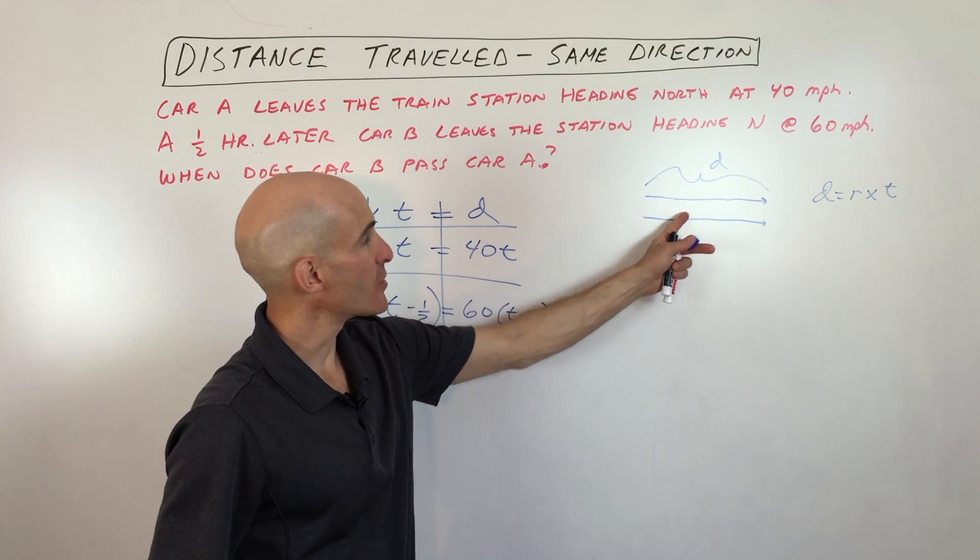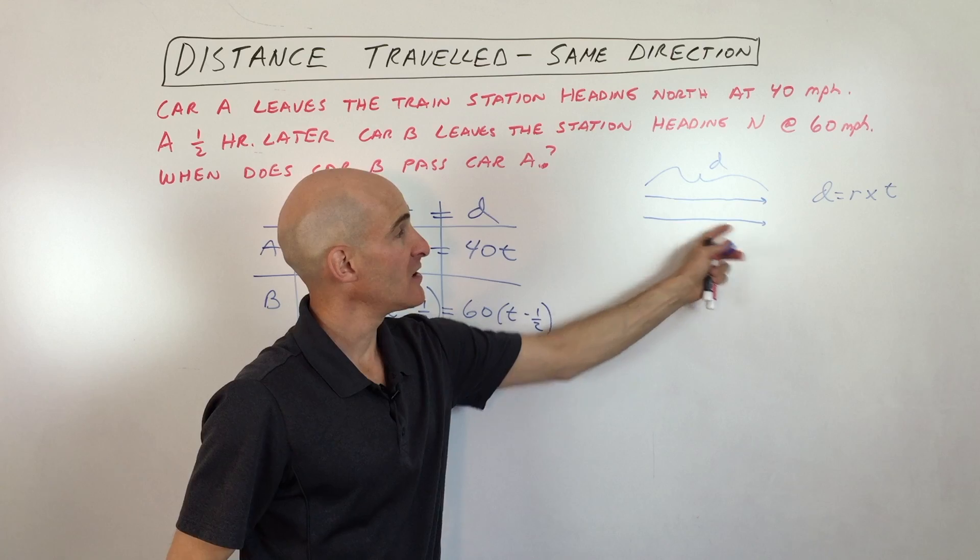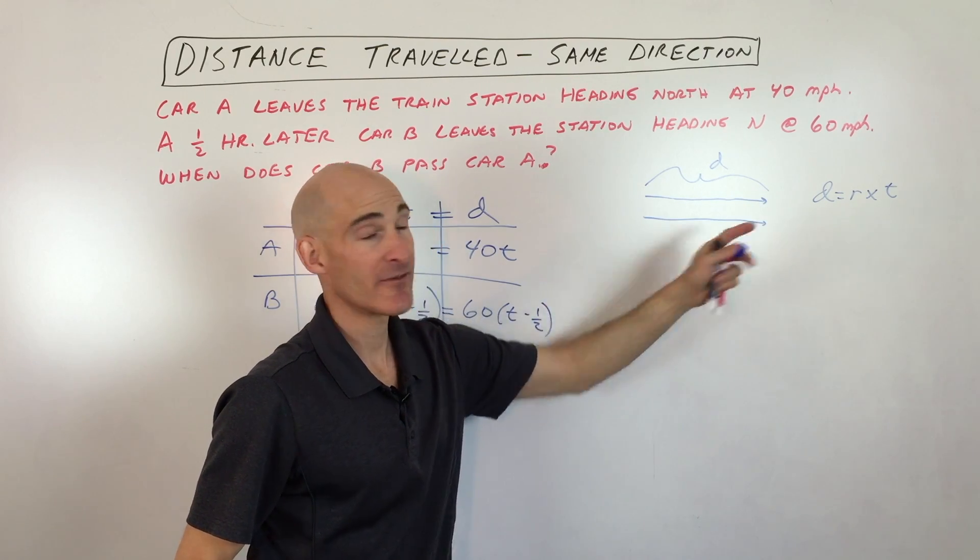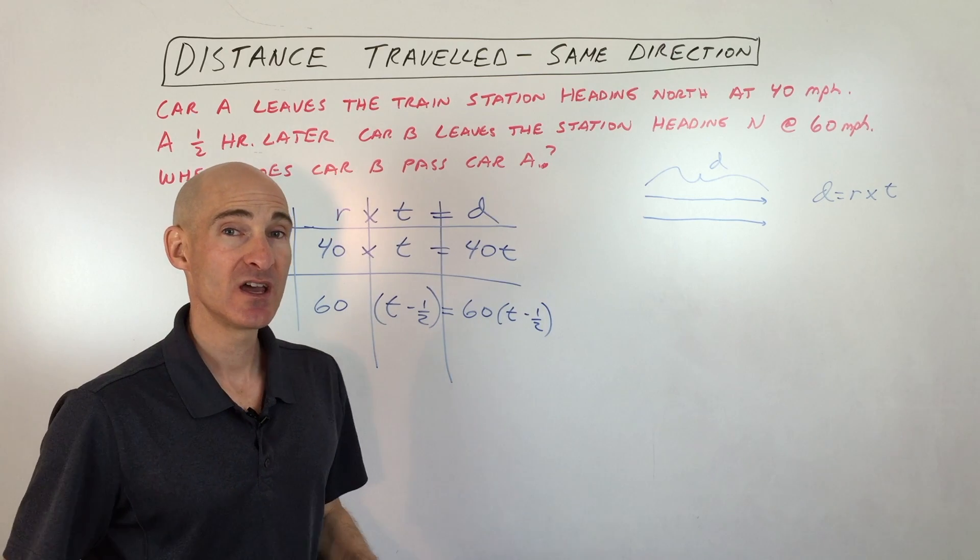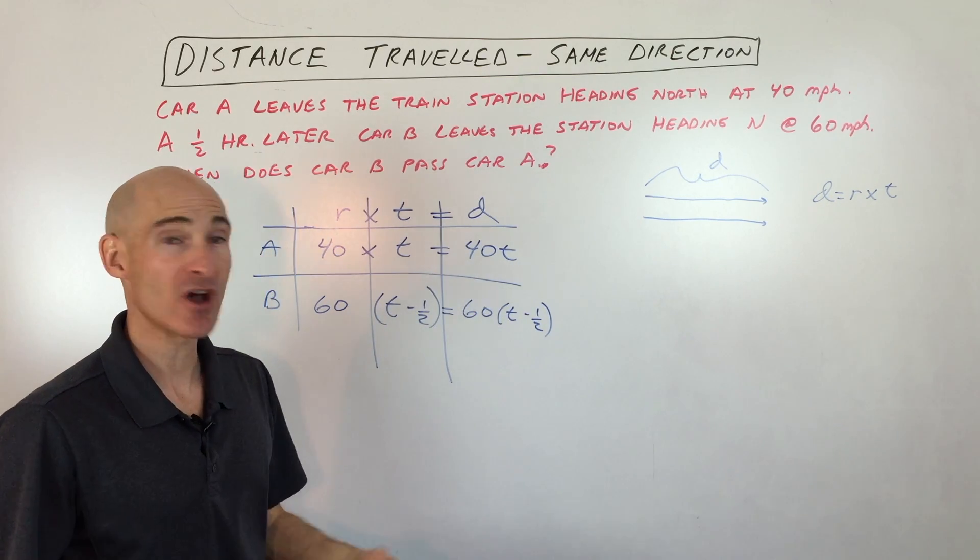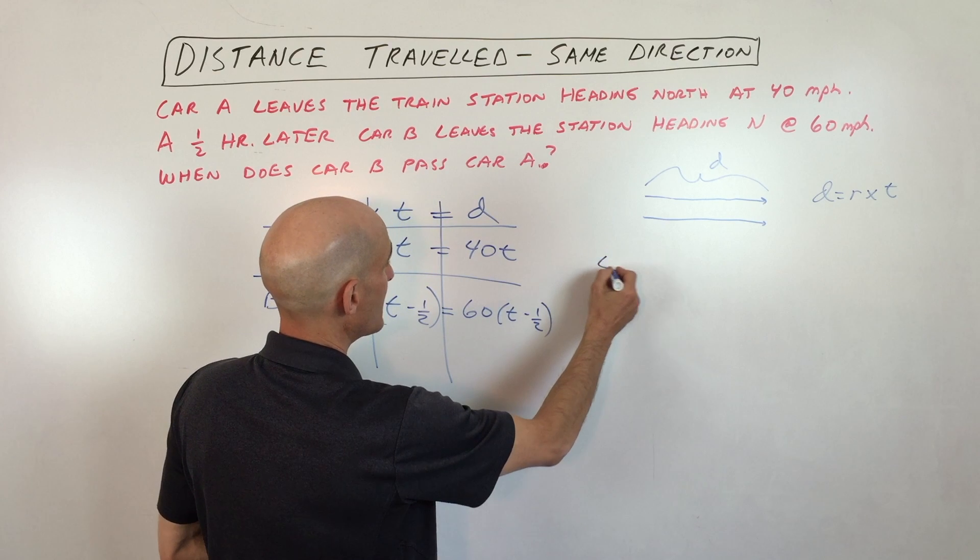Now, like we were talking about originally, eventually when car B catches up to car A, they're going to have traveled the same amount of distance. So what we're actually going to do is set those two distances equal to each other, and we're going to solve that equation. So let's go ahead and do that.